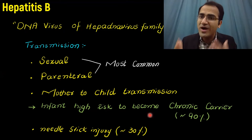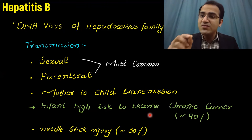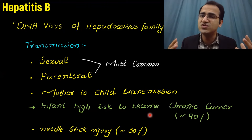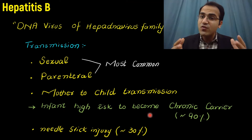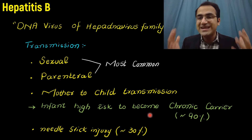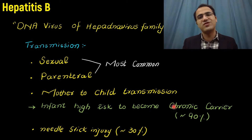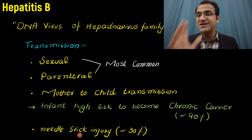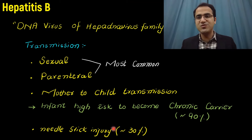Why does an infant get a chronic hepatitis B infection? Because that infant does not have a robust immune system, the immune response cannot clear the virus from the body. Therefore, the infant gets chronic infection and becomes a chronic carrier in 90% of cases. Additionally, needlestick injury, commonly seen in healthcare workers, can lead to a 30% chance of getting infected with hepatitis B virus.